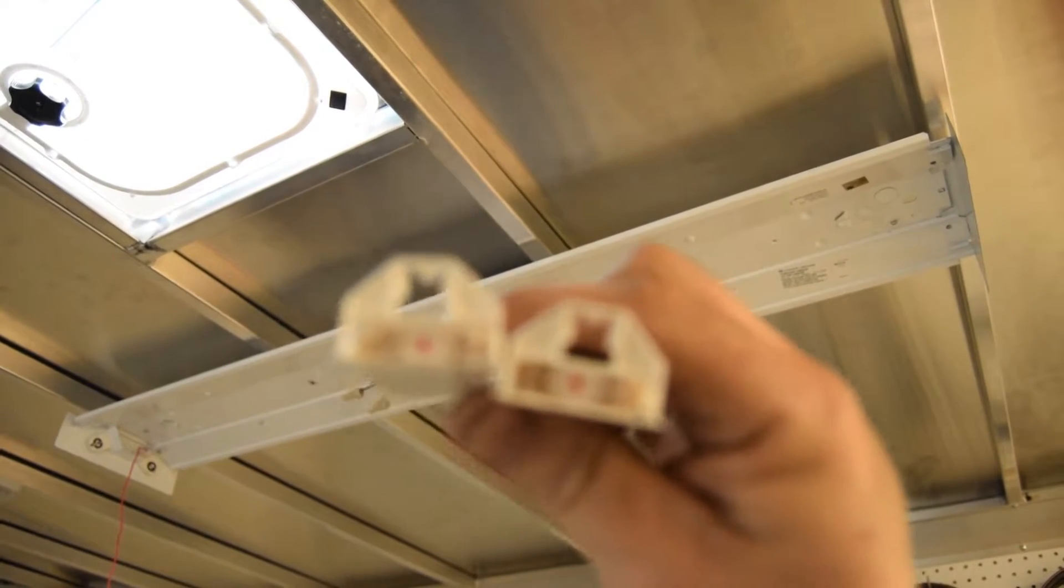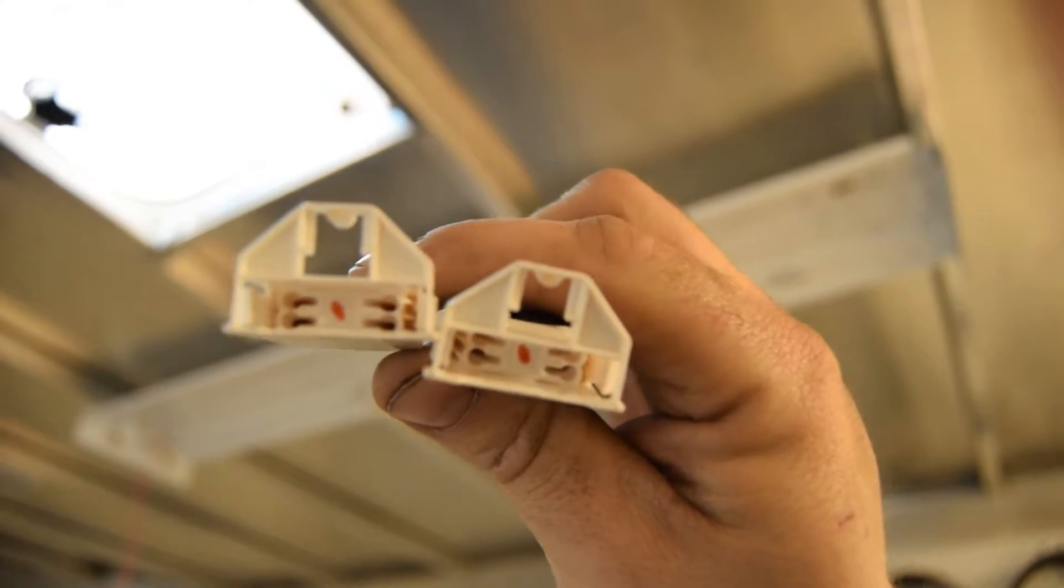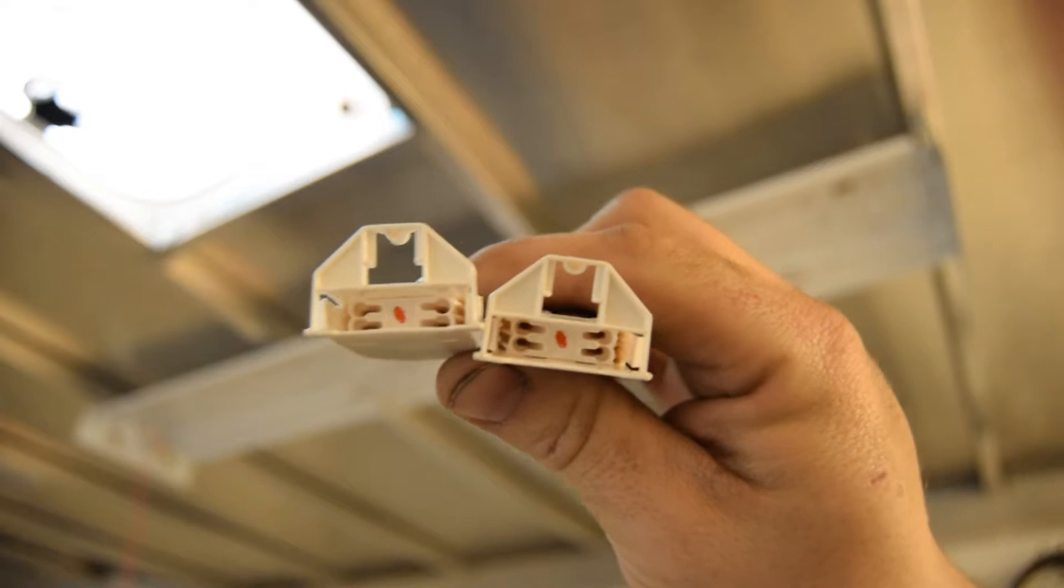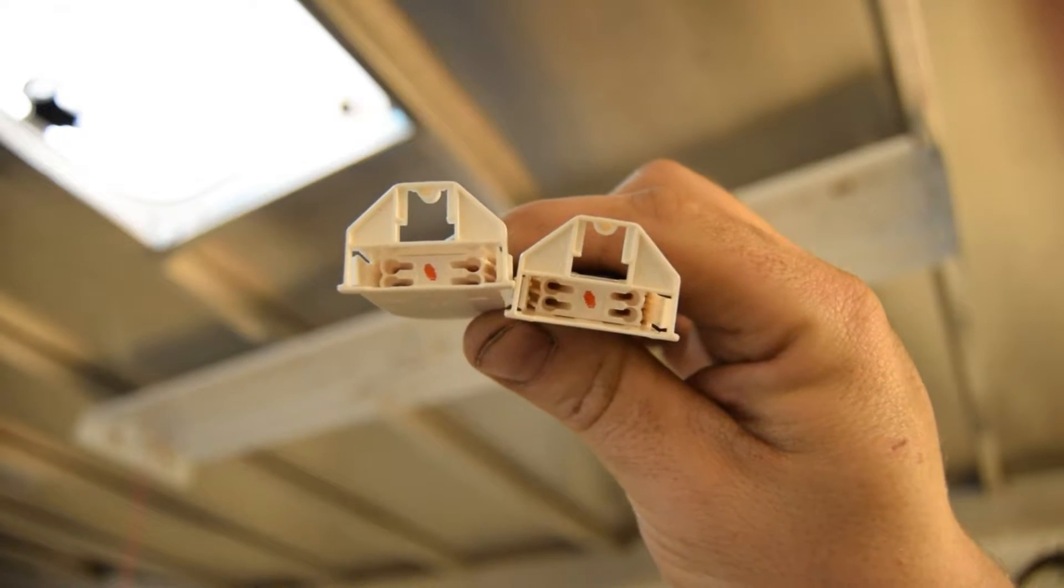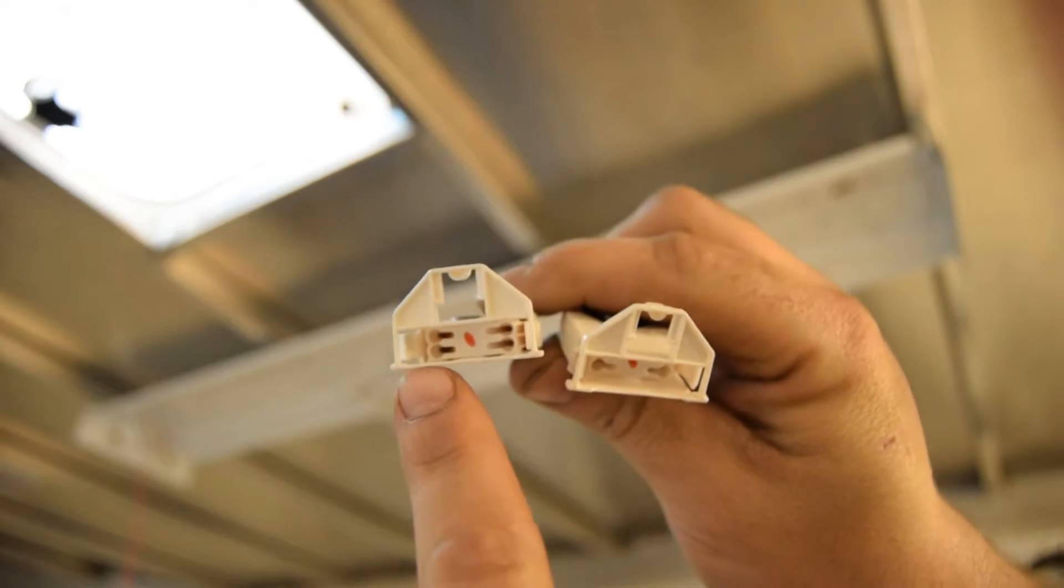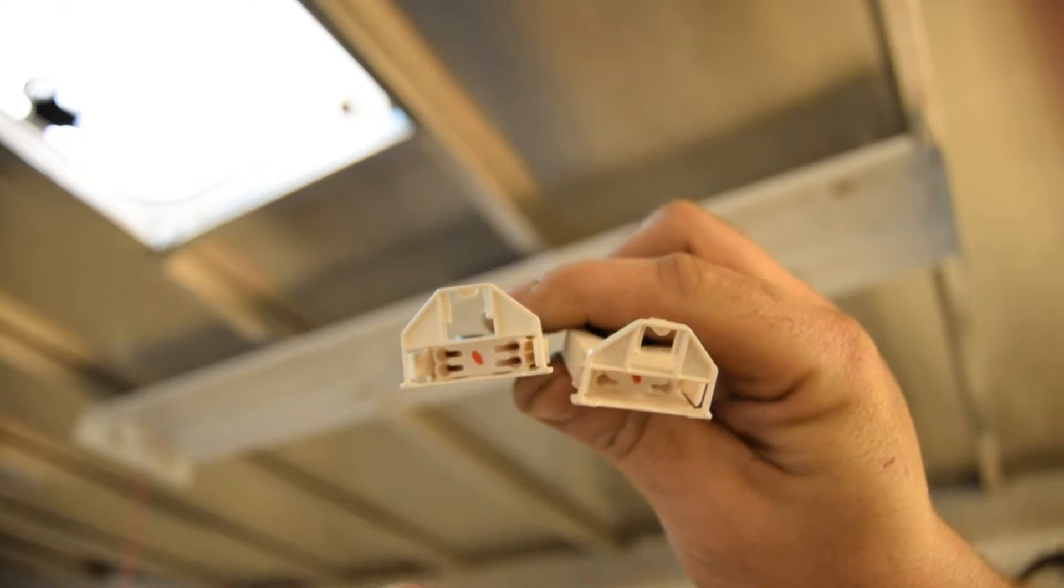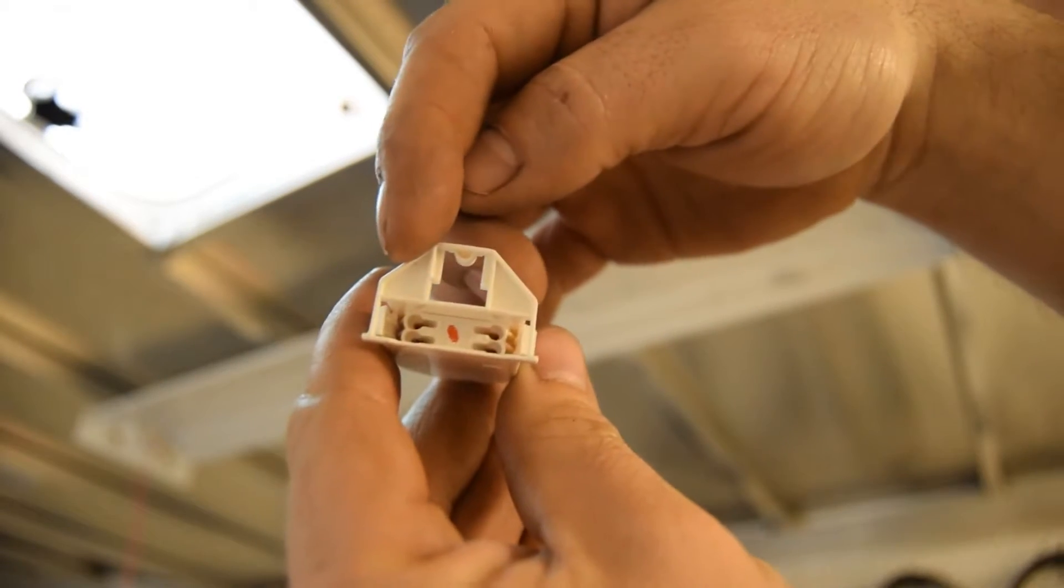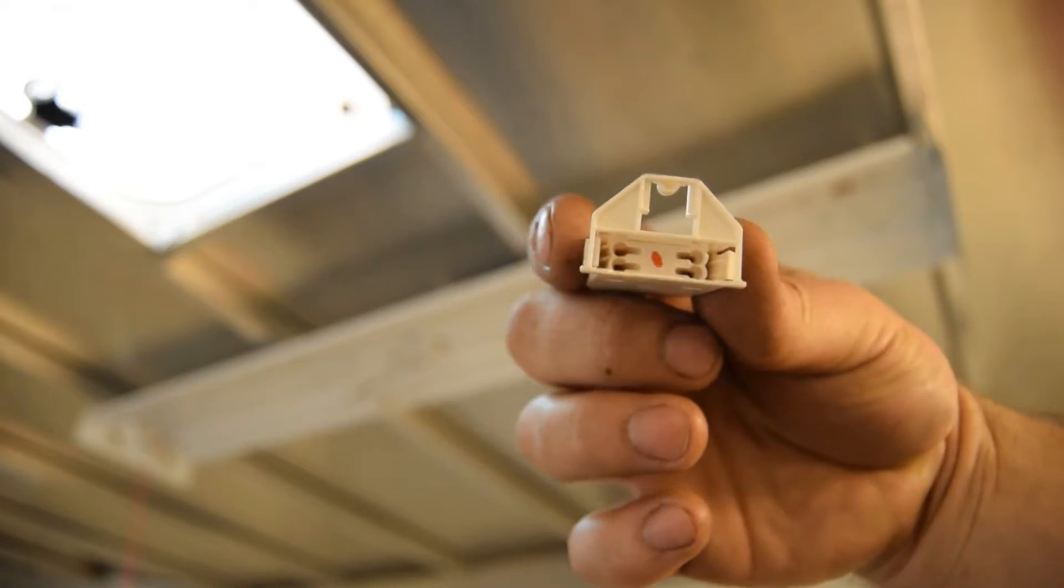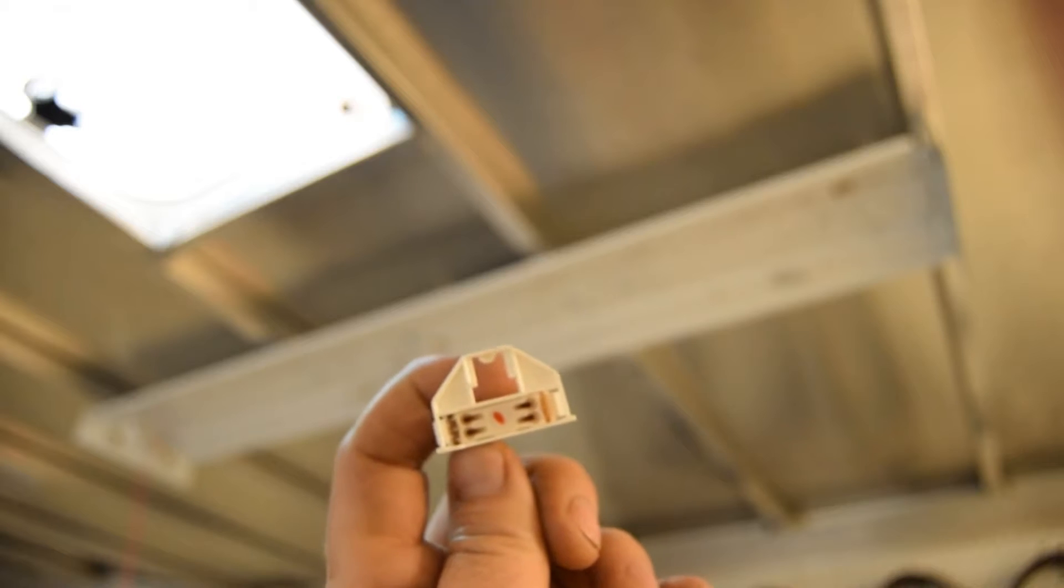All right guys, so here in the tombstones you can see there's four terminals inside. There's two on the left and two on the right. So what we're going to do is we're going to do a master and slave. We're going to do line and neutral in on this side, and then on the other side we're going to do line and neutral out to the other tombstone. So this will have two wires in it and this one will have four wires in it.